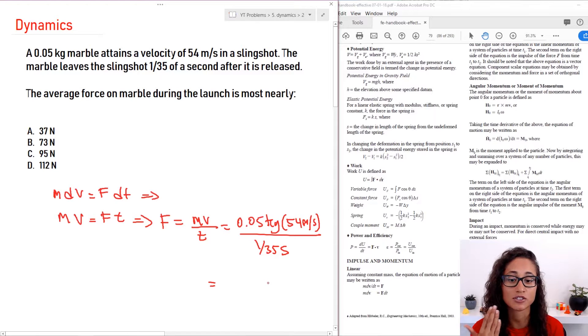Kilograms meters per second squared, that's the unit for Newton. And so this is going to be equal to 94.5 Newton, which is about 95. So the answer is going to be C.